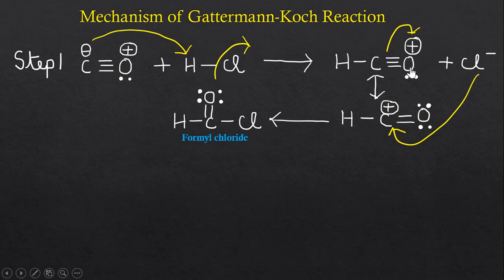In this intermediate, you can see there is a positive charge on the oxygen atom, which is stabilized by moving these pi electrons, and we will get this intermediate. So these are the two resonating structures.